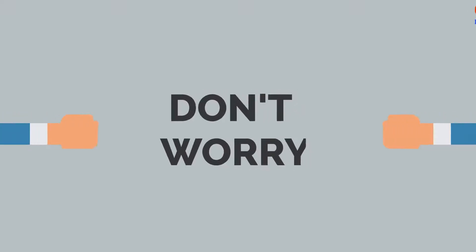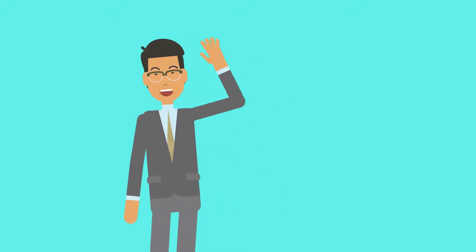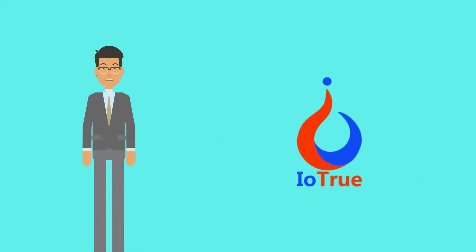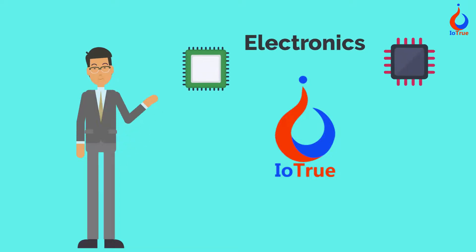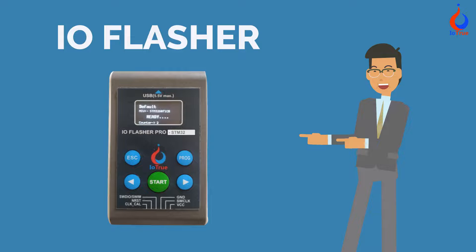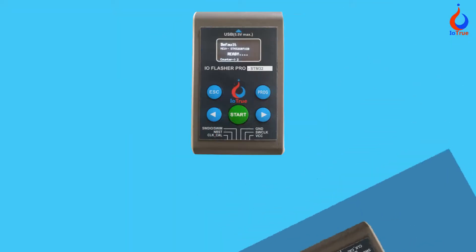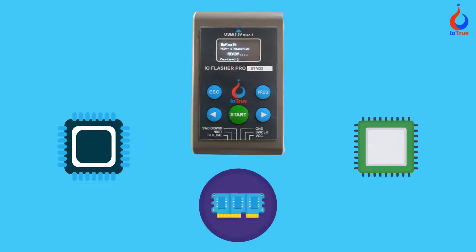Don't worry, we have a unique solution for you. Hello all and welcome to IOTRU Micro Solutions Private Limited. We are known for our excellent quality products in the field of electronics. This time we have come up with our very own new product, IO Flasher, which is a programming device used for flashing of microcontrollers, microprocessors, and memories.